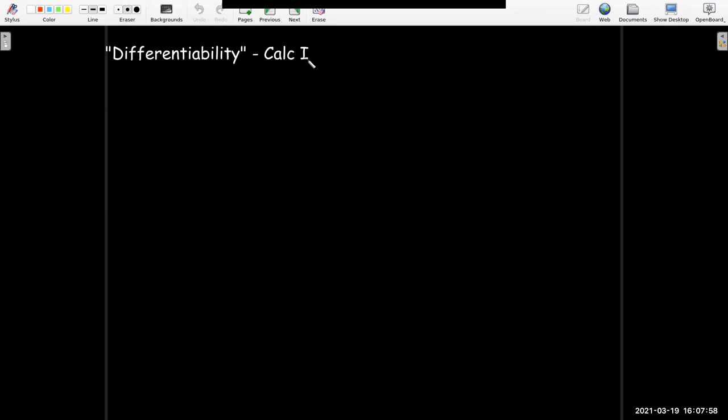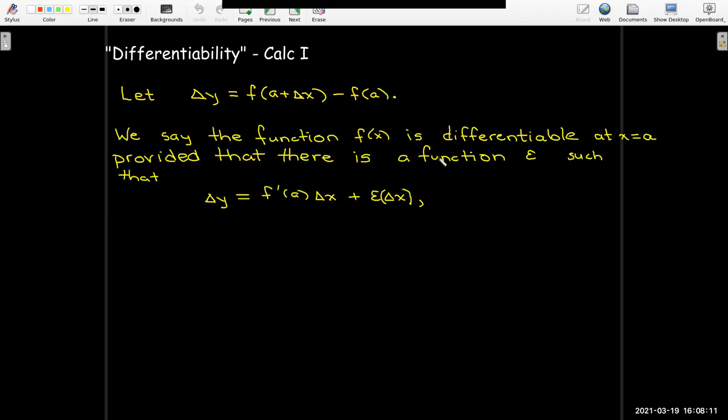Maybe you didn't even see this notion, but it's a pretty simple idea, even though there's a lot of complicated symbols here. We're just going to start with Δy as being the difference between f(a+Δx) and f(a). Simple idea. And then we're going to say that the function f is differentiable at x = a, provided that there's a function ε. This is the Greek letter epsilon, such that my Δy is essentially the equation or part of the equation from the tangent plane plus this bit over here. So ε really stands for an error function.